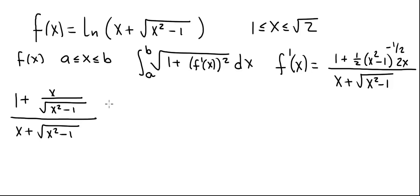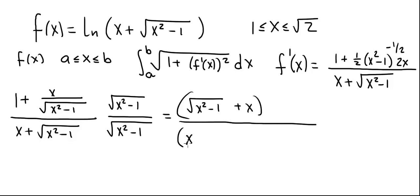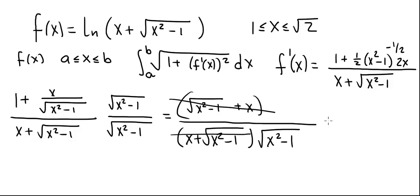We want to simplify this further, and to do that we'll multiply both numerator and denominator by the square root of x squared minus 1. In the numerator we have the square root of x squared minus 1 plus x, divided by, in the denominator, x plus the square root of x squared minus 1 times the square root of x squared minus 1. Notice that the numerator equals the denominator's first factor, so we can cancel, and this leaves 1 divided by the square root of x squared minus 1. That's our derivative.